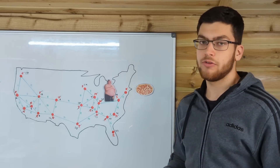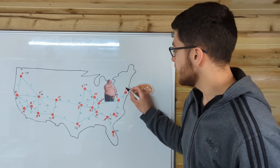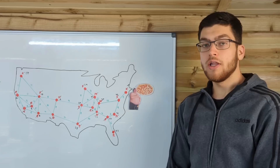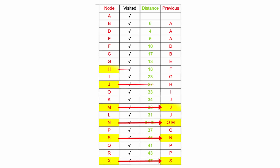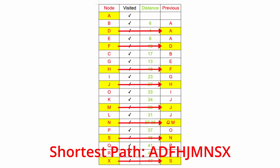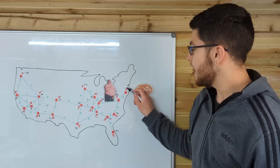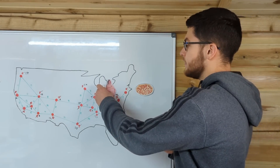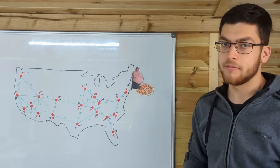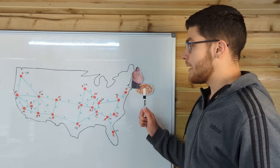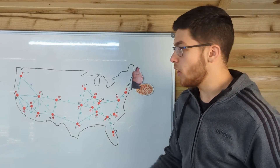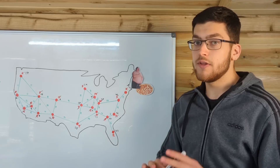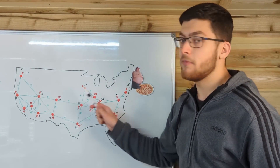The man makes it up to S in 45 hours, and finally he can make it to X in 47. All he needs to do now to find the shortest path is retrace his steps back to A: X, S, N, M, J, H, F, D, A. Once he's visited S and then visited X, he can be sure that this is the shortest path to get to X. Another useful thing about this graph is that not only has the man found the shortest path to vertex X, he's also found the shortest path to all the other vertices. So he can use this same graph to get to anywhere from vertex A — for example, if he wants to get from LA to Indianapolis, he just needs to follow the nodes from N.